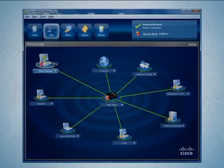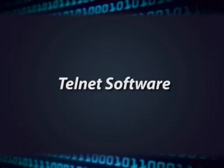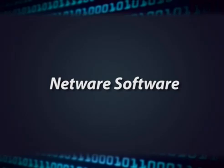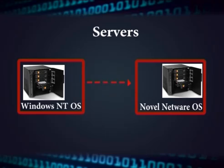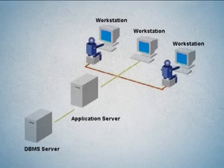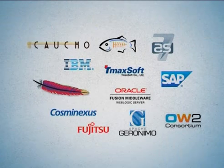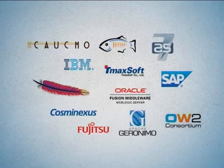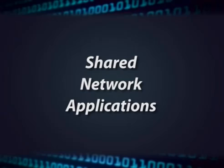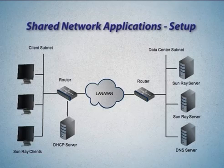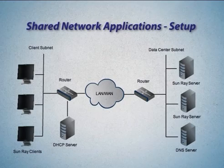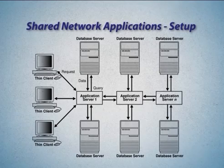After learning about operating systems, we move to network utilities. Telnet software is used for network connectivity from Windows operating system to Linux operating system, and also for connectivity from Windows to Novell network operating systems. It includes customer relationship management software and replaces end-user contact management software. All network software shares the common goal of increasing productivity and improving security for network users. Shared network applications are stored on a central server but run from individual client computers — for example, certain types of database applications such as Oracle.